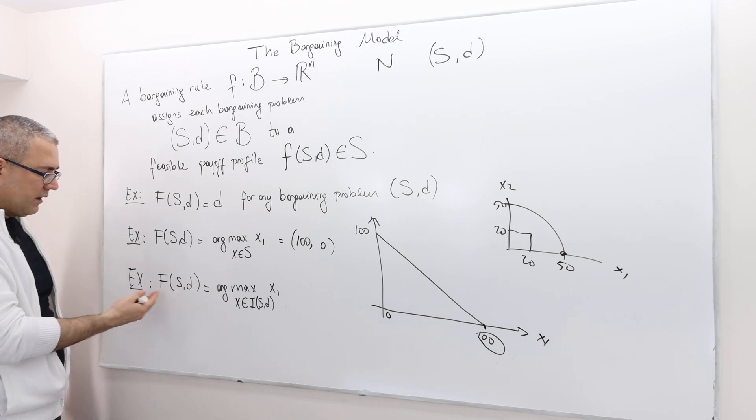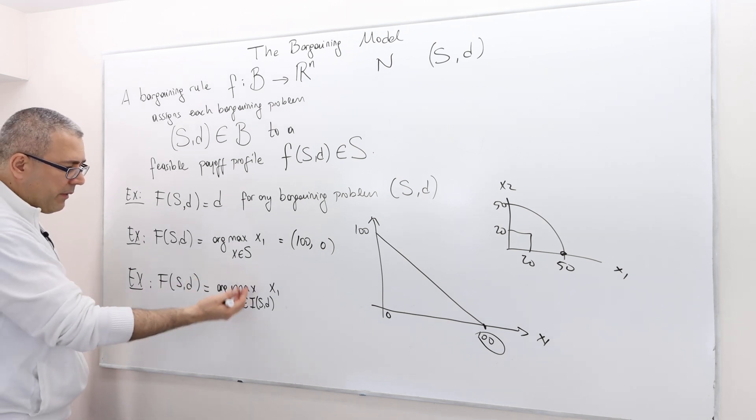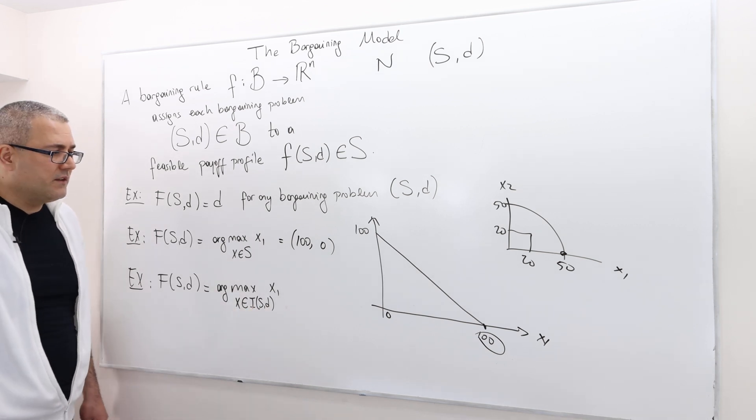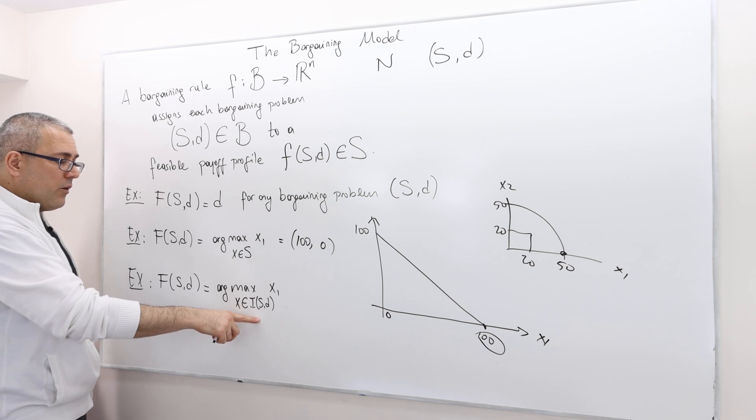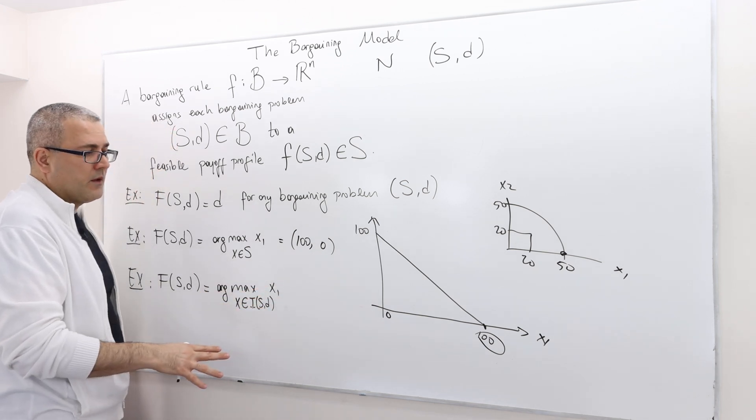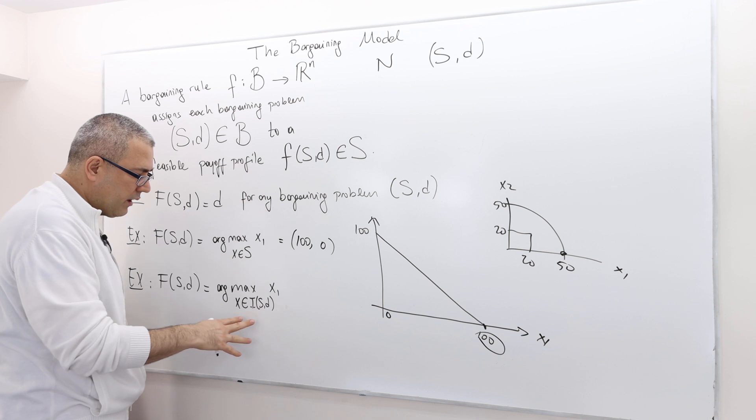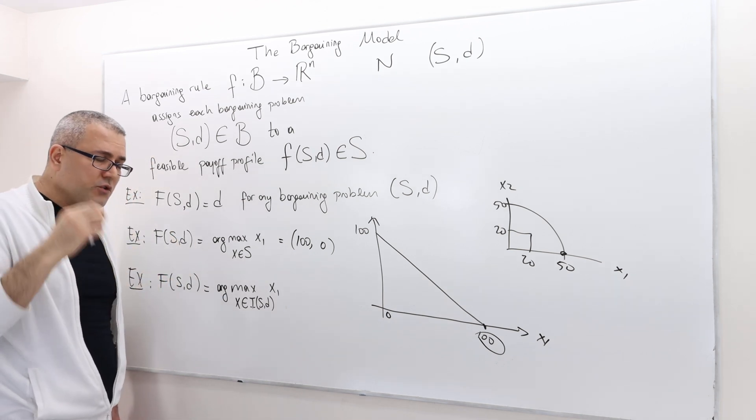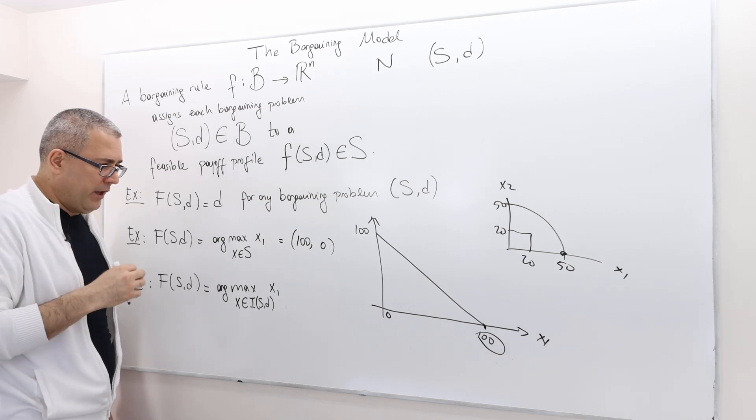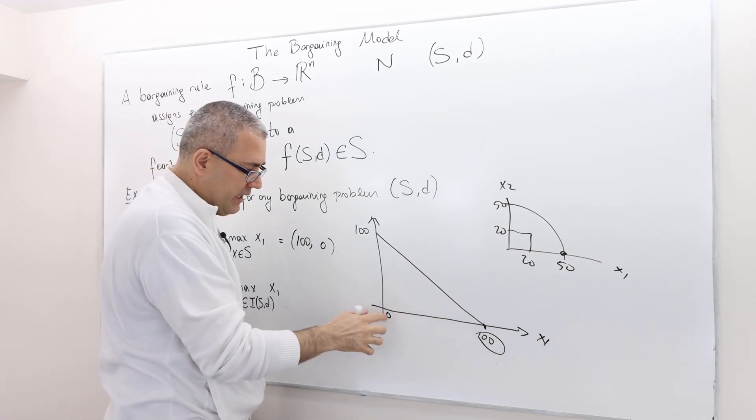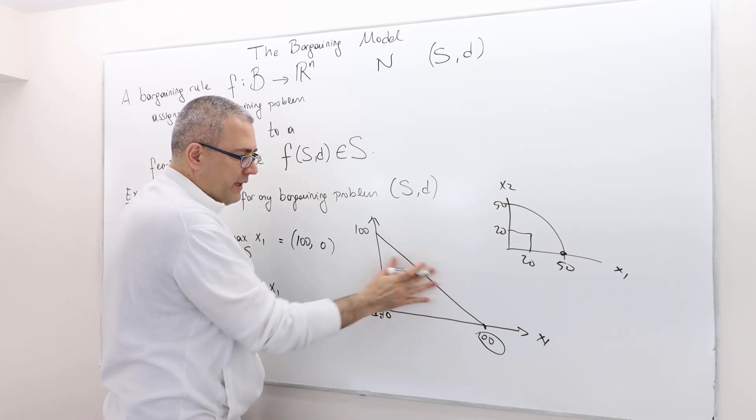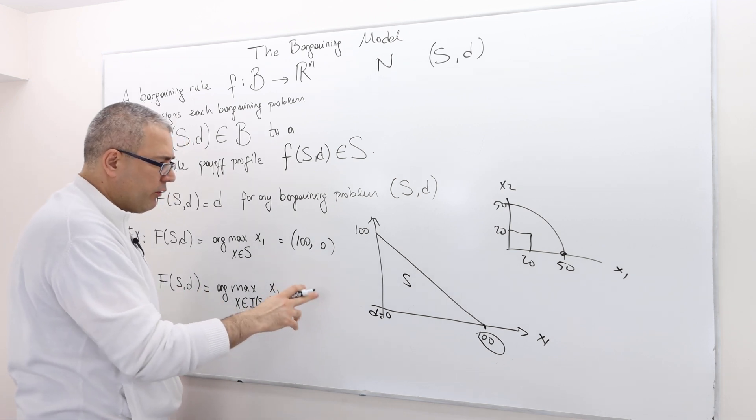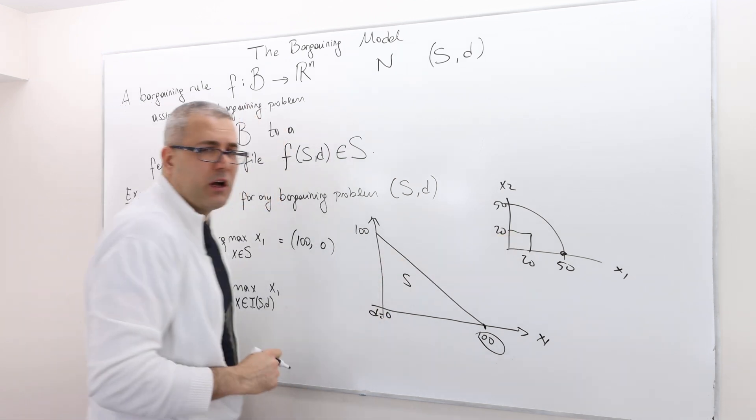What about this? Define the rule as such that argmax x1, but this time choose your x's from i(S,d) set. So when you try to maximize x1, the surplus of player one, choose your x's from the individually rational feasible payoffs. So in this example, d is zero. So all the S is individually rational. And so therefore, it is still going to be 100 and zero.